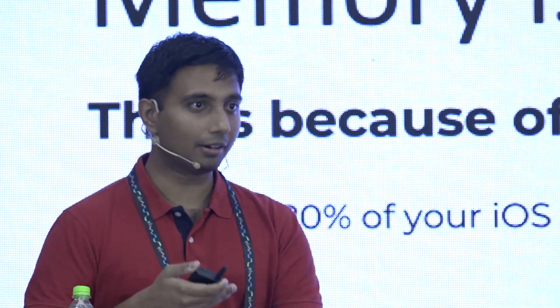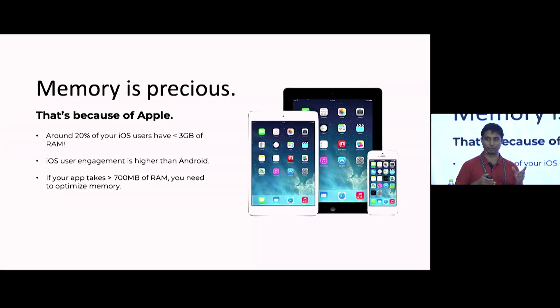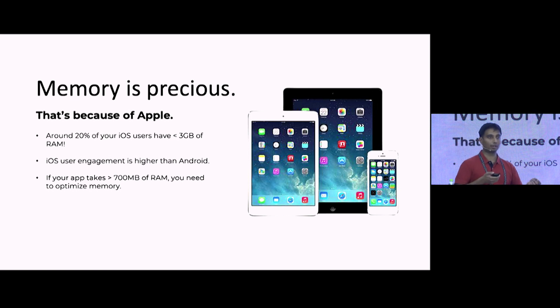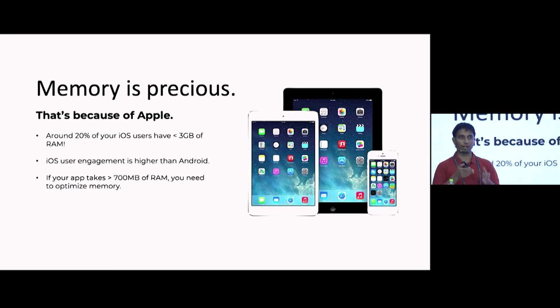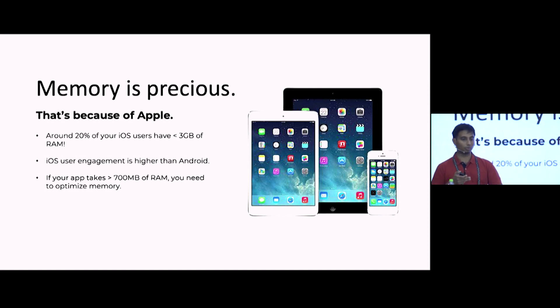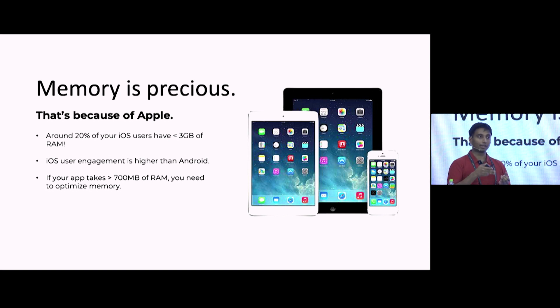Our benchmark is around 700 MB — anything above 500 MB you should start investigating, but at 700 MB it's definitely time to take action. You'll start seeing crashes and low memory warnings on lower-end devices. The problem with iOS is that engagement is much higher there, and the proportion of paying users on iOS is higher than Android. Those 20% of users with very little memory are still significant contributors to engagement and revenue, so you can't ignore them.